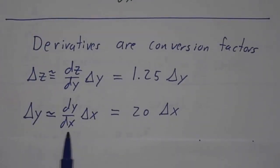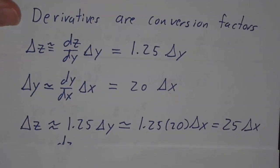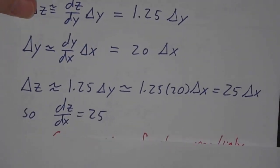And delta y is approximately 20 delta x. So delta z is 1.25 delta y, which is 1.25 times 20 times delta x, so it's 25 delta x. So the conversion factor between delta x and delta z is 25. The change in z is 25 times as big as the change in x, so the derivative of z with respect to x must be 25.